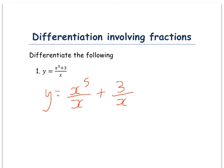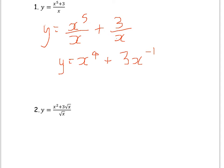You should remember that x to the power of five divided by x to the power of one simplifies to x to the power of four. Also, one over x means x to the power of minus one, from the first chapter. So this becomes three x to the power of minus one.